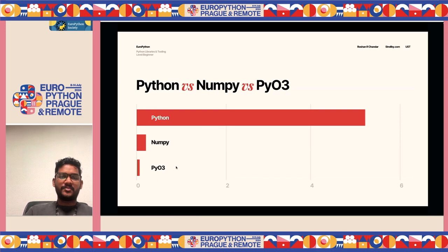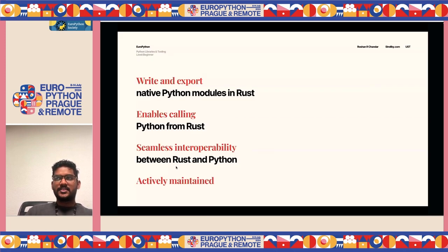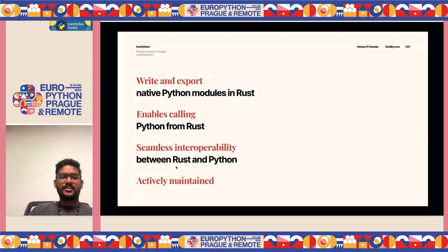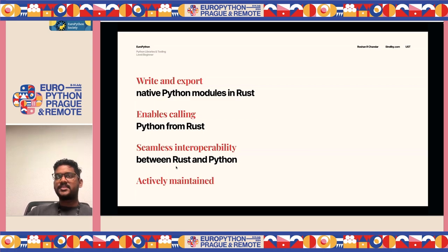So what is actually PyO3? PyO3 is a way to write and export native Python modules with Rust. You create Python modules built using Rust, and essentially you call Rust code from inside your Python program. You get all the simplicity of Python plus the good memory optimization, type safety, and other features Rust has. It's a seamless interoperability between Rust and Python, and it's an actively maintained project.